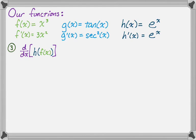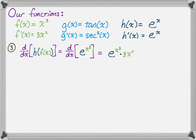Now, the derivative of h(f(x)), which is the derivative of e^(x³). The derivative of e to the something is just e to that thing, then by the chain rule times the derivative of that thing. The derivative of x³ is 3x². So we get 3x²·e^(x³).